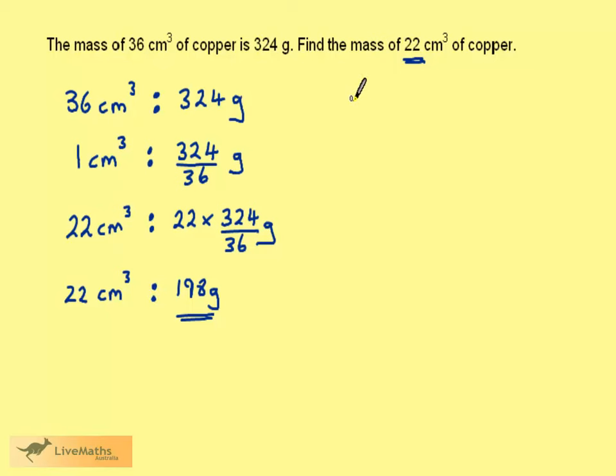Of course, there is no need to use a ratio to do this, although the way we calculate is exactly the same. We could just say 36 cm³ is equivalent to 324 g. But from this point, the calculation is exactly the same.